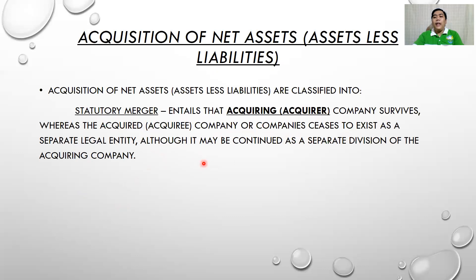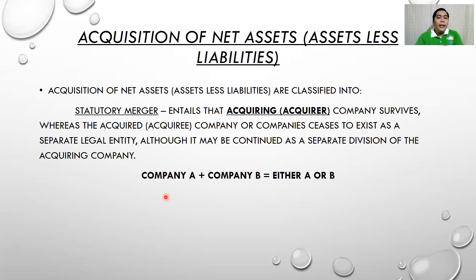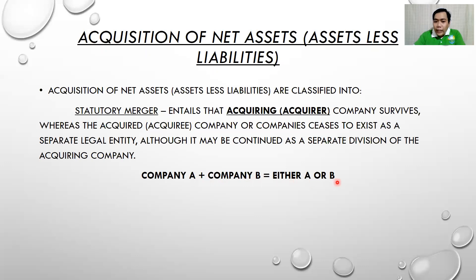For the formula of statutory merger: if Company A is the acquirer and it acquires Company B, the remaining company is either A or B — depending on who the acquirer is. If Company A is the acquirer and Company B is the acquiree, then only Company A remains. If Company B is the acquirer and Company A is the acquiree, then Company B remains.